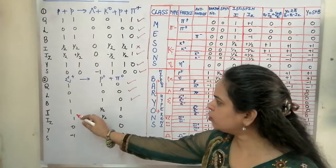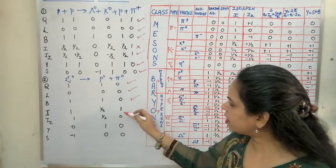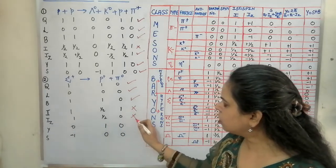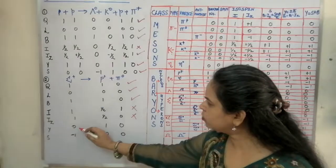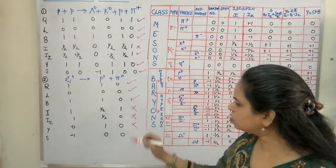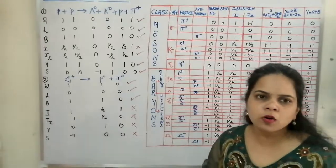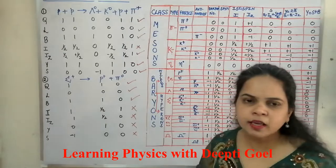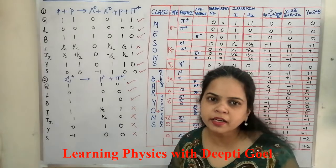For total isospin I: sigma positive has I = 1, proton has I = 1/2, and pi naught has I = 1 — I is not conserved. The Iz value is also not conserved. For hypercharge: sigma positive has Y = 0, proton has Y = +1, and pi naught has Y = 0 — hypercharge is not conserved. Strangeness is also not conserved. Therefore, this reaction cannot take place through strong or electromagnetic interaction; the decay proceeds via the weak interaction.